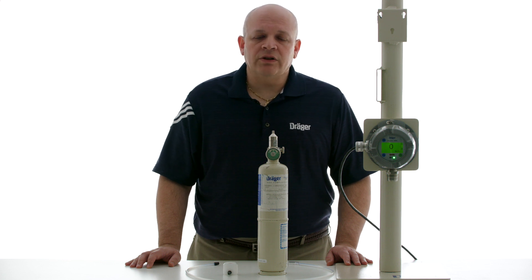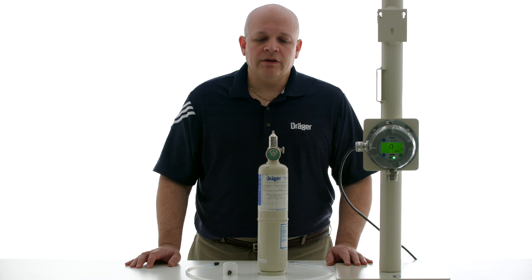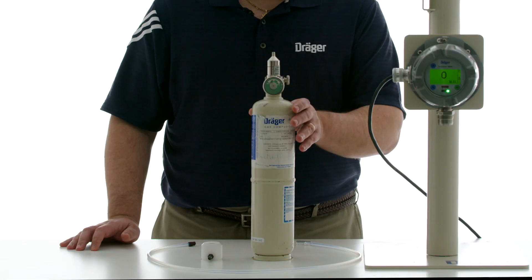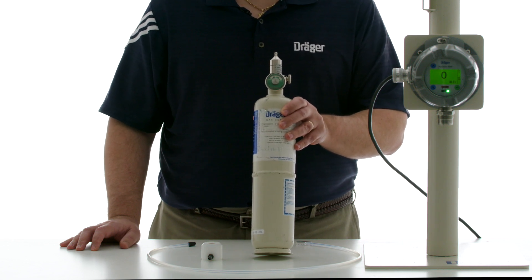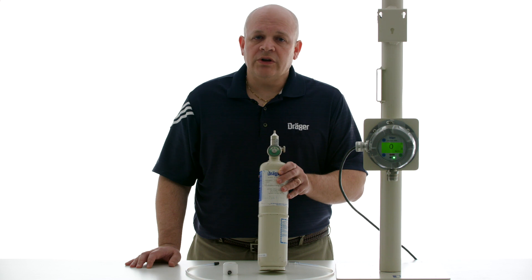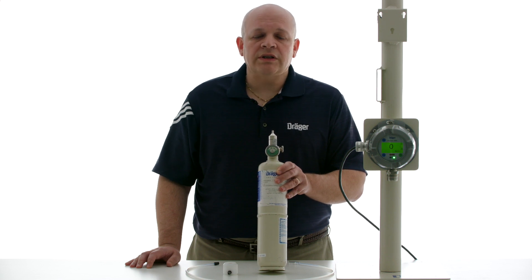The procedure is identical if you're using a Point Guard 2200. The equipment that you will need is a span calibration cylinder as well as a zero calibration cylinder. For zero you could either use ambient air or you could use zero air with 20.9% by volume oxygen. Please be sure to not use any calibration gas that contains nitrogen as catalytic bead sensors will not work with nitrogen.